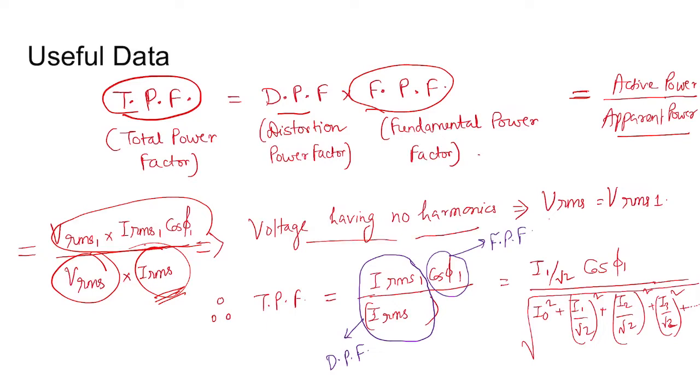But voltage has no harmonics, so Vrms equal to Vrms1. In that case, Vrms1 gets cancelled, and total power factor is Irms1 cos φ divided by Irms.